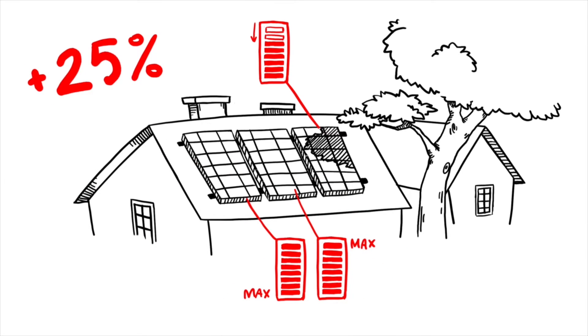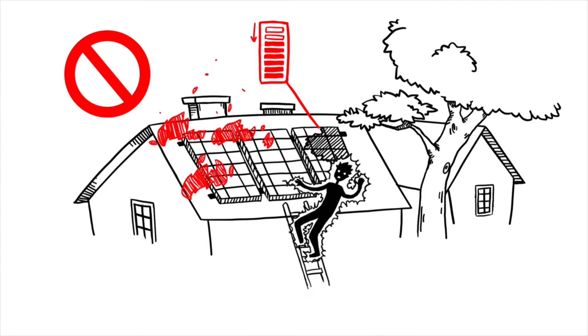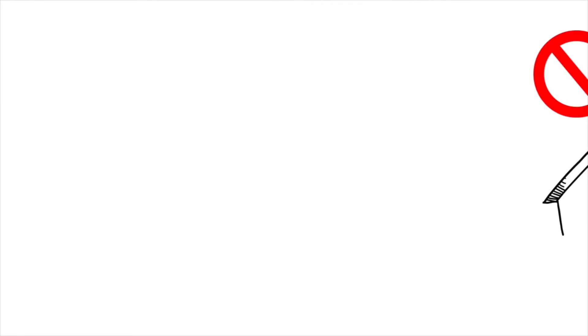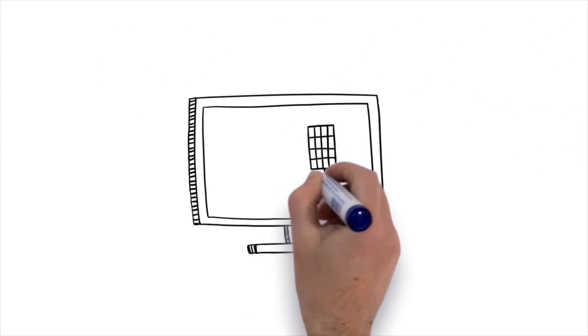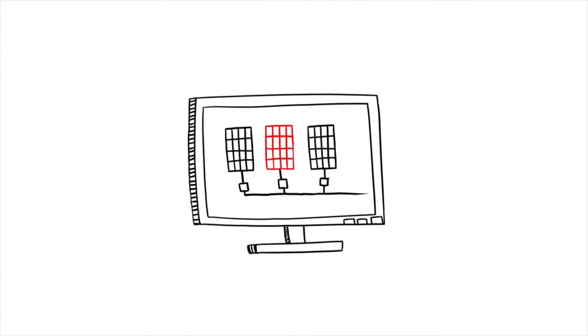Lastly, AC solar systems are safer and more reliable. There are no dangerous high DC voltages in the system and each solar module is individually monitored so underperforming modules can be quickly identified and investigated.